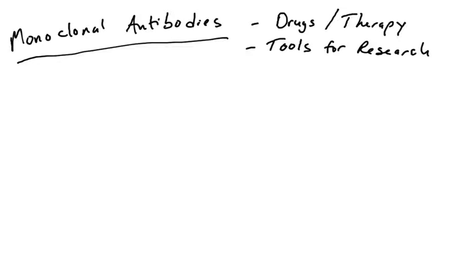Monoclonal antibodies are extremely useful tools for treating diseases and disorders in humans, and are also used as tools in biomedical research. Let's learn about how monoclonal antibodies are made, and we'll also talk about treatments using monoclonal antibodies for diseases like cancer, autoimmune disorders, transplantation rejection, etc.